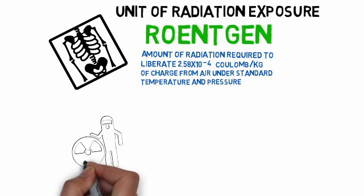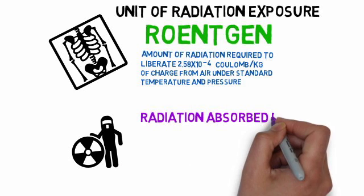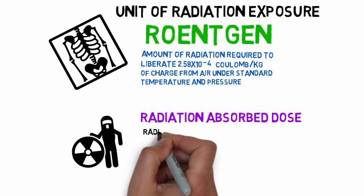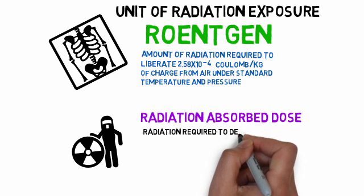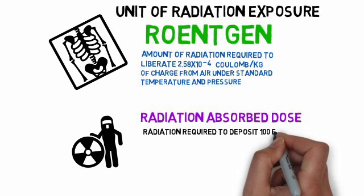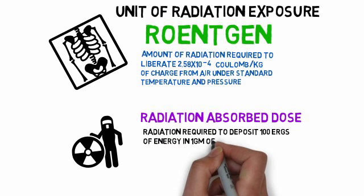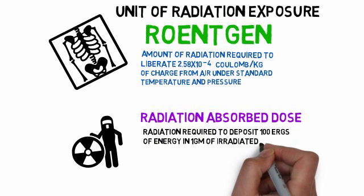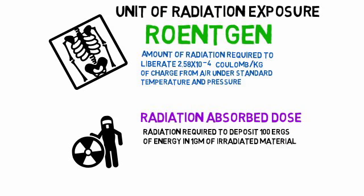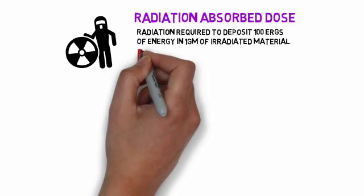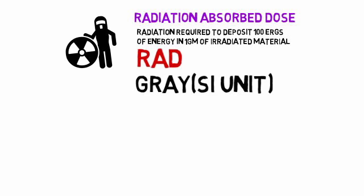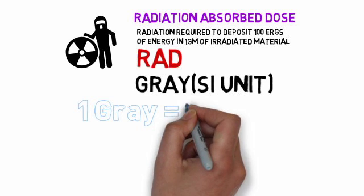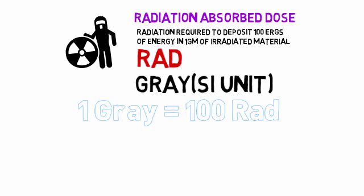What is radiation absorbed dose? Radiation required to deposit 100 ergs of energy in 1 gram of irradiated material is called radiation absorbed dose. The unit is rad and the SI unit is gray. 1 gray is equal to 100 rad.